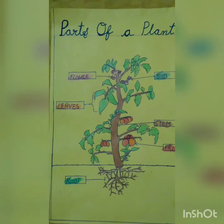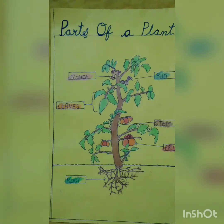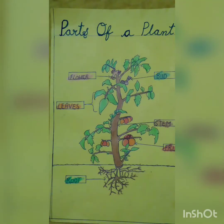If I talk about the function of fruit, fruits contain seeds. These seeds are dispersed to different places, and from those seeds a new plant can grow. Some examples of fruits that we eat are mango, apple, and strawberry.